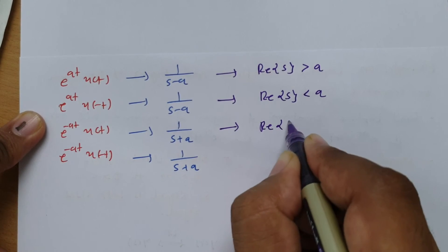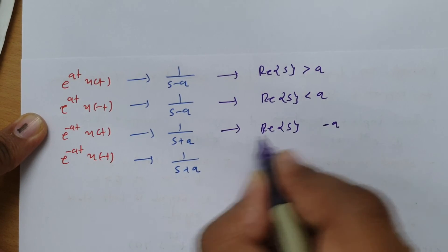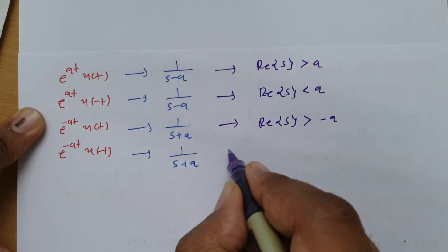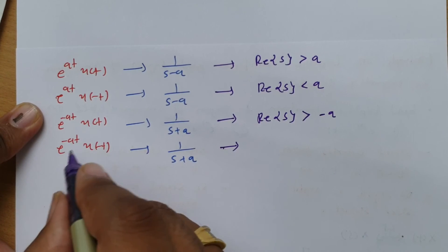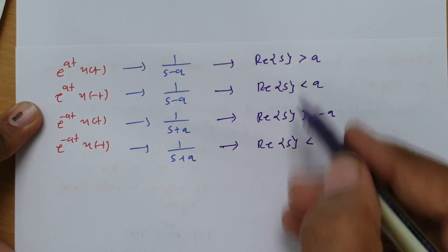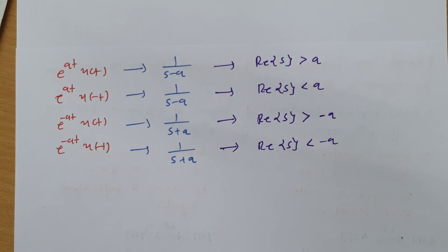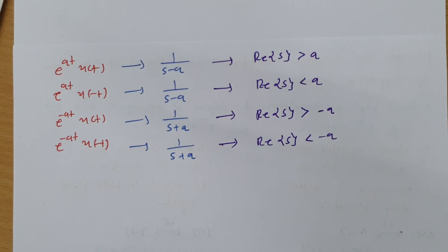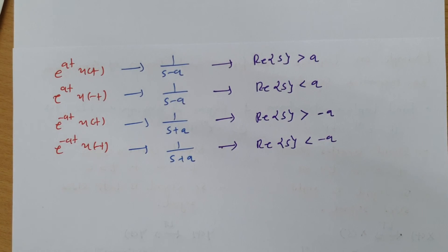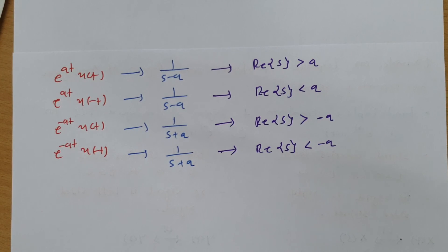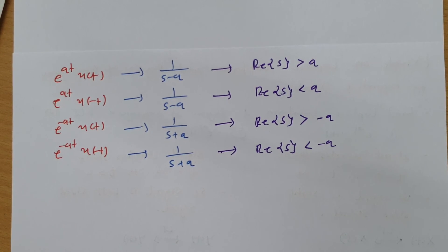For the third case, the pole is at s equals minus a, and since it is a right-sided signal, the ROC should be real part of s greater than minus a. For the fourth case, it is a left-sided signal, so the ROC is real part of s less than minus a. This is how the region of convergence can be directly calculated. In GATE examinations, examples are based on these tricky concepts, so one should understand these basics to solve all such examples. I hope you have understood this session — thank you so much for watching.